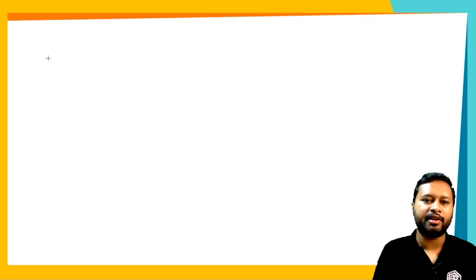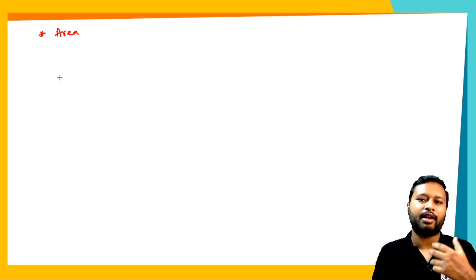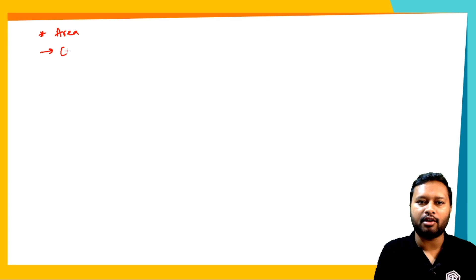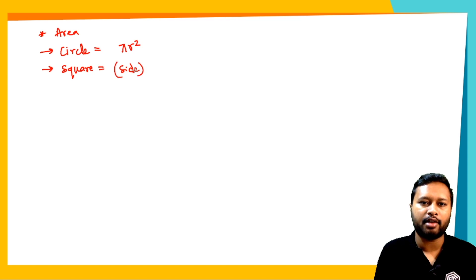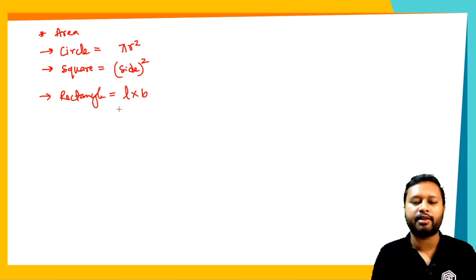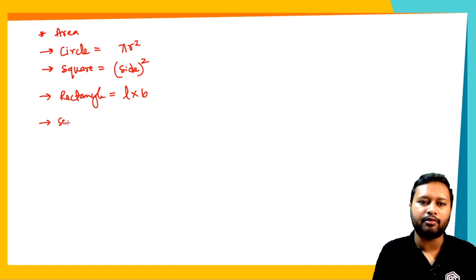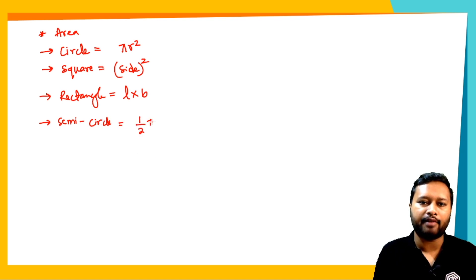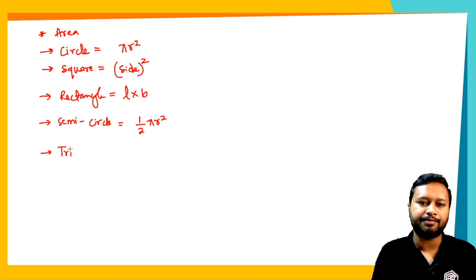When we talk about geometry related questions asked in CSIR NET exam, mostly they are area related questions. The general formulas you should know: area of a circle is π r², where r is the radius; area of a square is side²; area of a rectangle is length × breadth; and area of a semicircle is ½ π r².